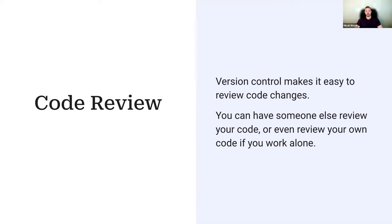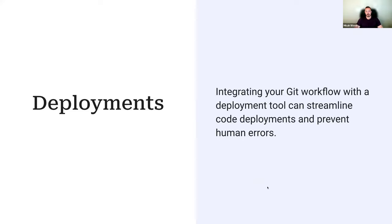Version control lets you do code reviews — you can have someone else look at your code, or even review your own code by creating pull requests on your own repositories, sleeping on it, and coming back with fresh eyes the next day. You can also integrate version control with different deployment tools to streamline code deployment and prevent human error. Having that automated will save you time and potential heartache if something goes wrong.